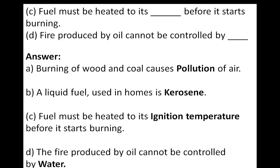The fire produced by oil cannot be controlled by water. Because oil is lighter than water and water is denser, water settles beneath the oil and the oil particles on top catch fire immediately. So instead of removing the fire, the oil supports it since it acts as fuel, having a low ignition temperature. That's why fire produced by oil cannot be controlled by water.